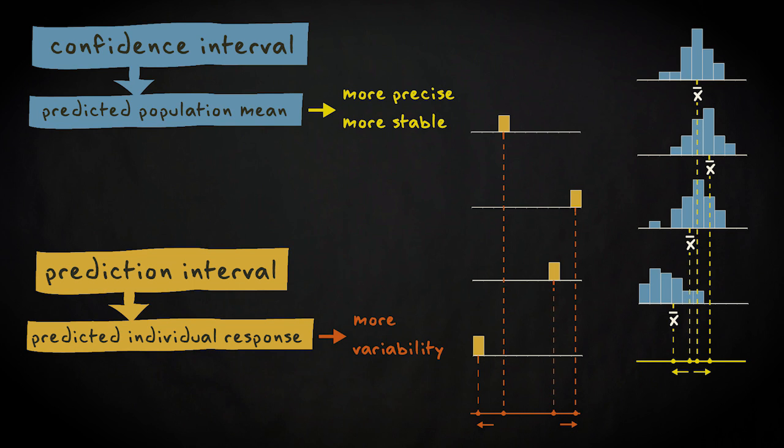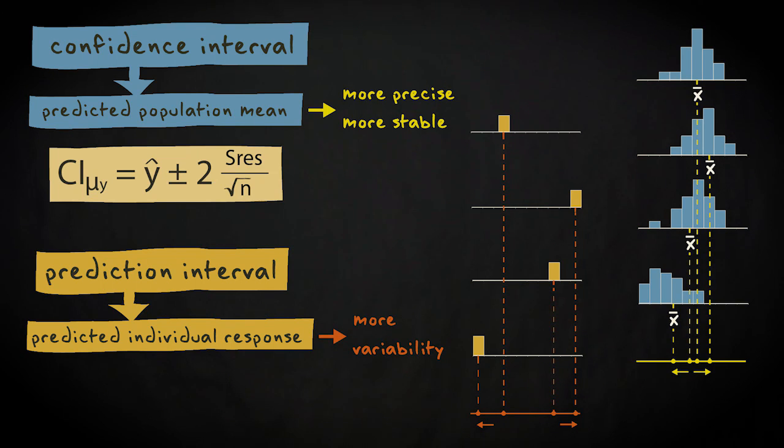If we draw just one case repeatedly, we'll see more variability than in the mean. This is why we have two separate formulas for calculating an interval for a predicted mean population score and a predicted individual score.